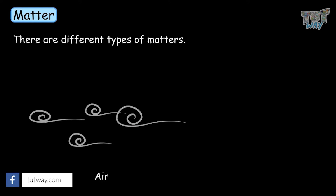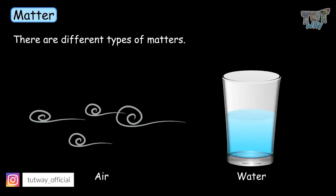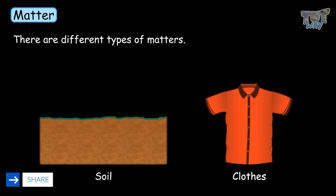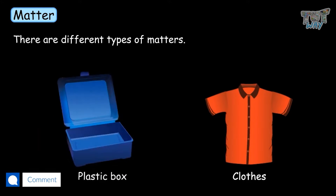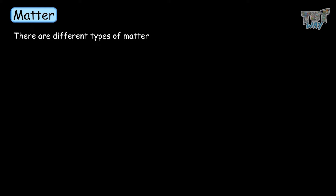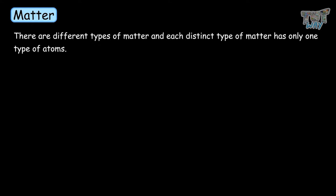But we see that there are different types of matter. Like air is different from water, water is different from soil, soil is different from your clothes, your clothes are different from this plastic box, the plastic box is different from this glass, and so on. So there are different kinds of matter, and distinct types of matter only have one type of atom. These distinct types of matter are known as elements.